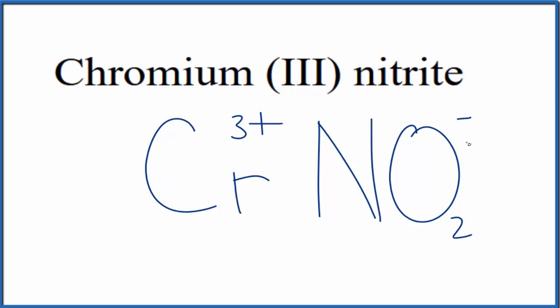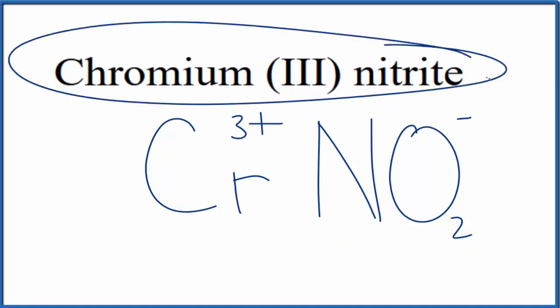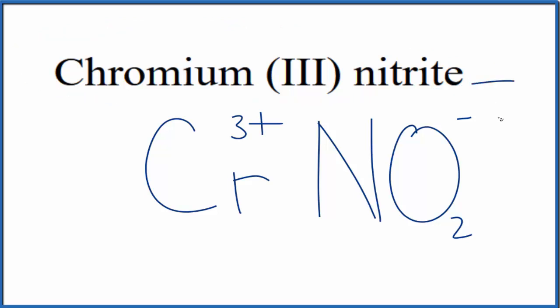This 1- goes to the whole nitrite ion here. Because chromium (III) nitrite is a neutral compound, it doesn't say ion after it. These charges, this 3+ and the 1- here, they need to add up to zero. We need a net charge of zero.